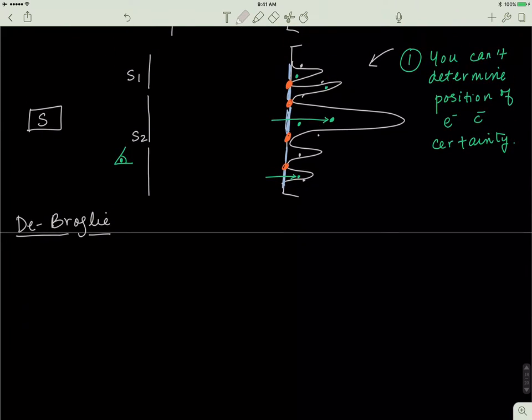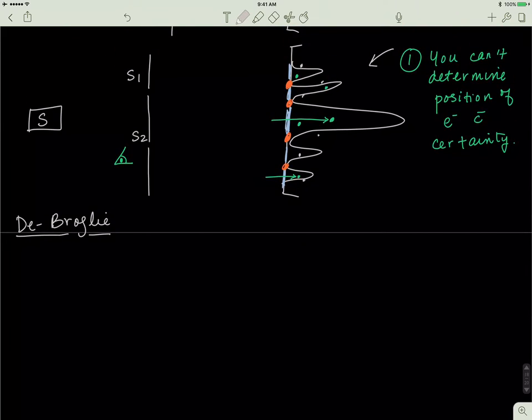And then we said that if there are two slits, then it behaves like a wave. Then to eliminate the possibility that this wave was created due to interference, we sent one electron at a time, but we still saw the same pattern. Then another thing was that we could never predict where the electron is going to land with 100% certainty. We could guess based on chances, but we could never predict it with 100% certainty.